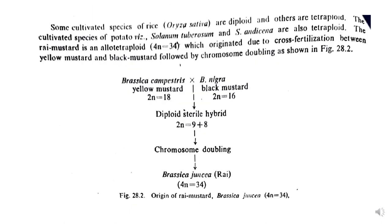Another example: Brassica campestris when hybridized with Brassica nigra gave rise to a diploid sterile hybrid, and after chromosome doubling it gave rise to Brassica juncea, a tetraploid Brassica species. These examples were discussed in polyploidy and numerical changes in chromosomes. Students can refer to those video lectures, notes, and books to understand this topic better.